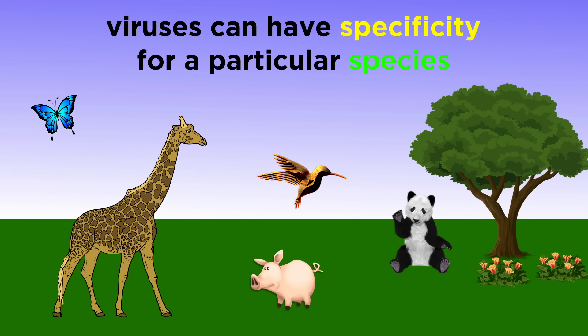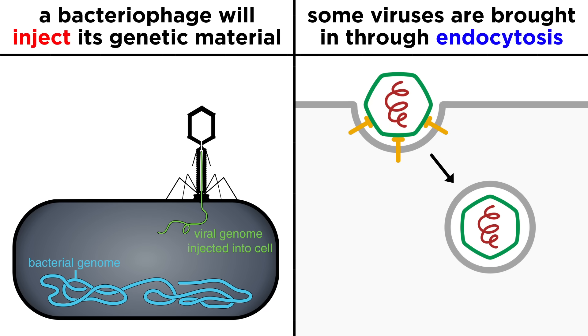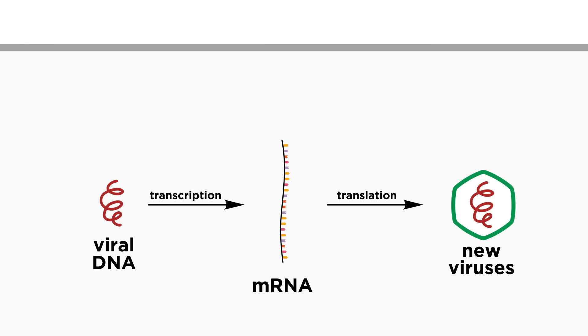For this reason, many viruses are specific to only a small set of species, or even one individual species, and sometimes even a particular type of cell found within that individual species. Once this recognition occurs, the virus either injects its genetic material into the cell if it's a bacteriophage, or the virus can be brought inside the cell completely intact through endocytosis. Once inside, the virus disassembles and the viral DNA gets transcribed and translated by all the parts of the cell that are typically busy working for the cell itself.